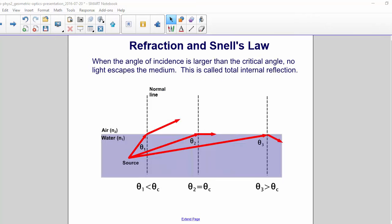When the angle of incidence is larger than the critical angle, no light escapes the medium. This is called total internal reflection.